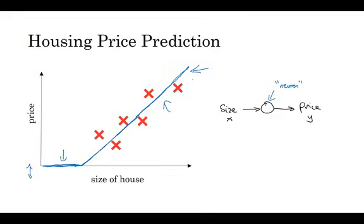And all that the neuron does is it inputs the size, computes this linear function, takes a max of zero, and then outputs the estimated price.